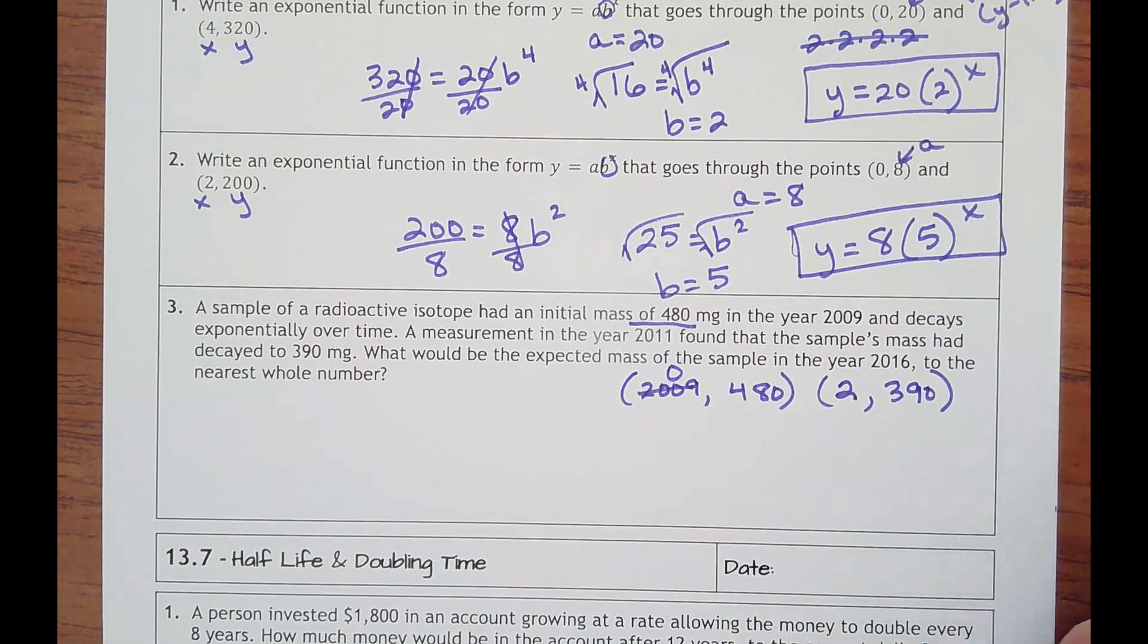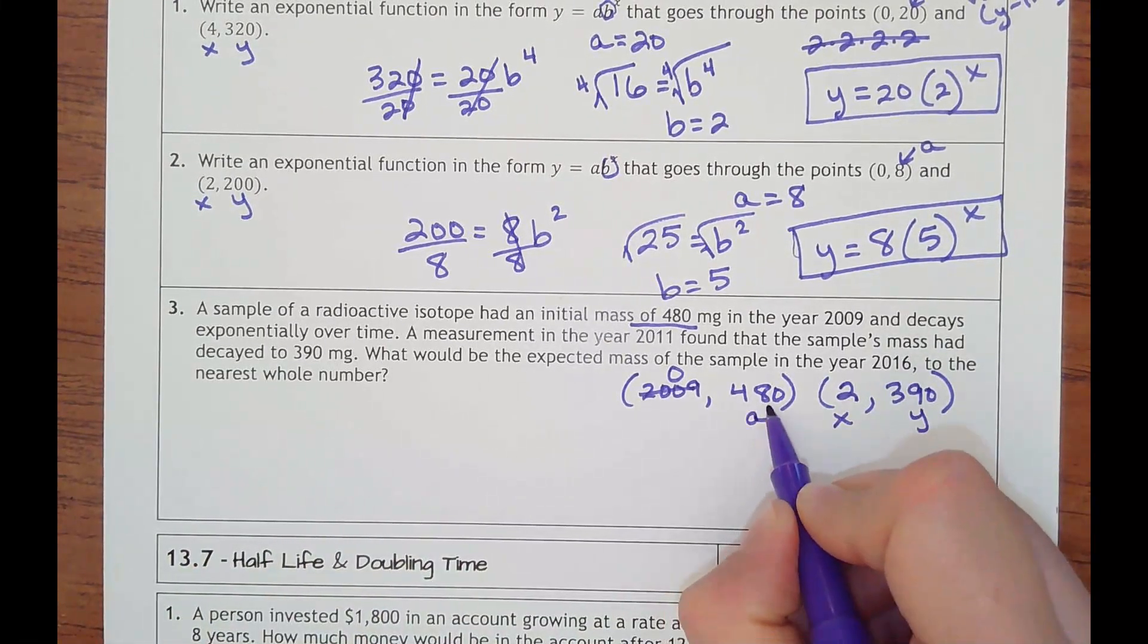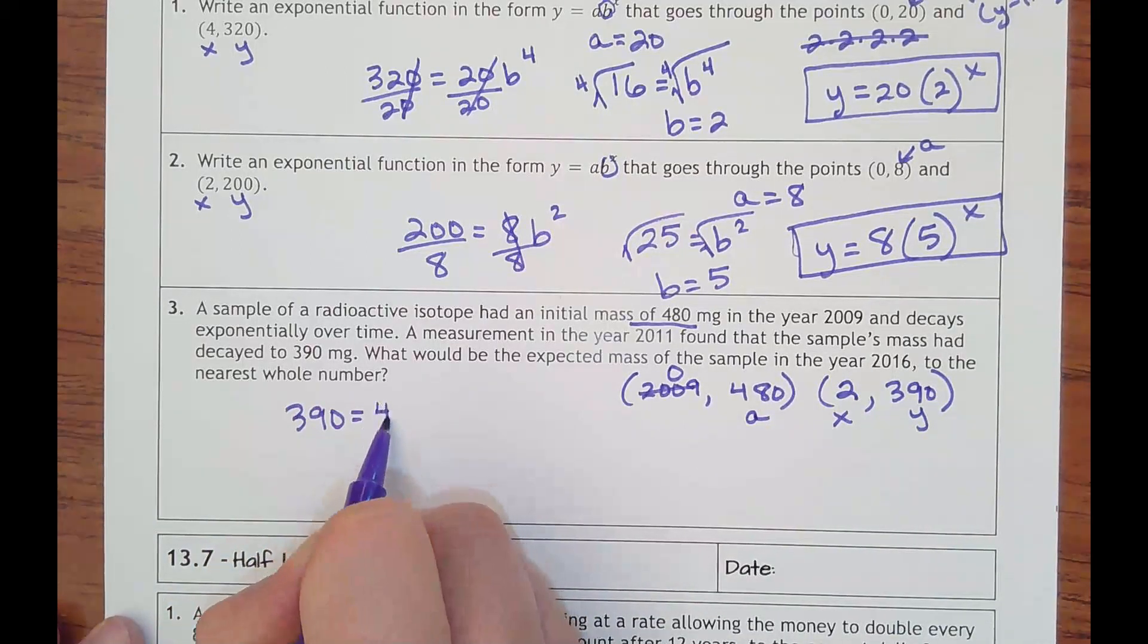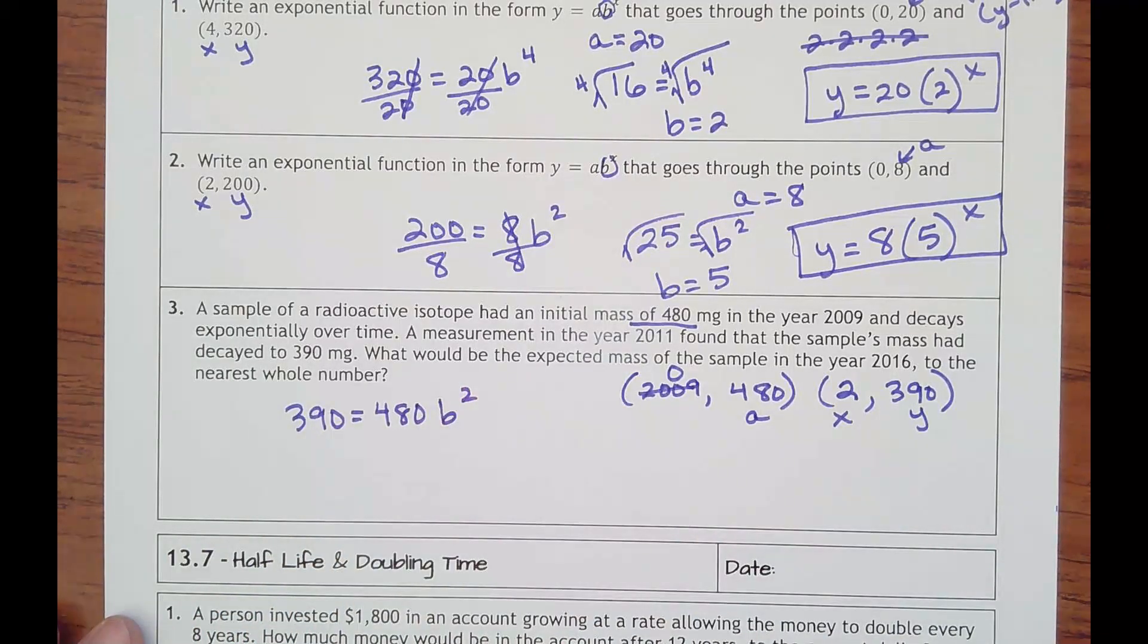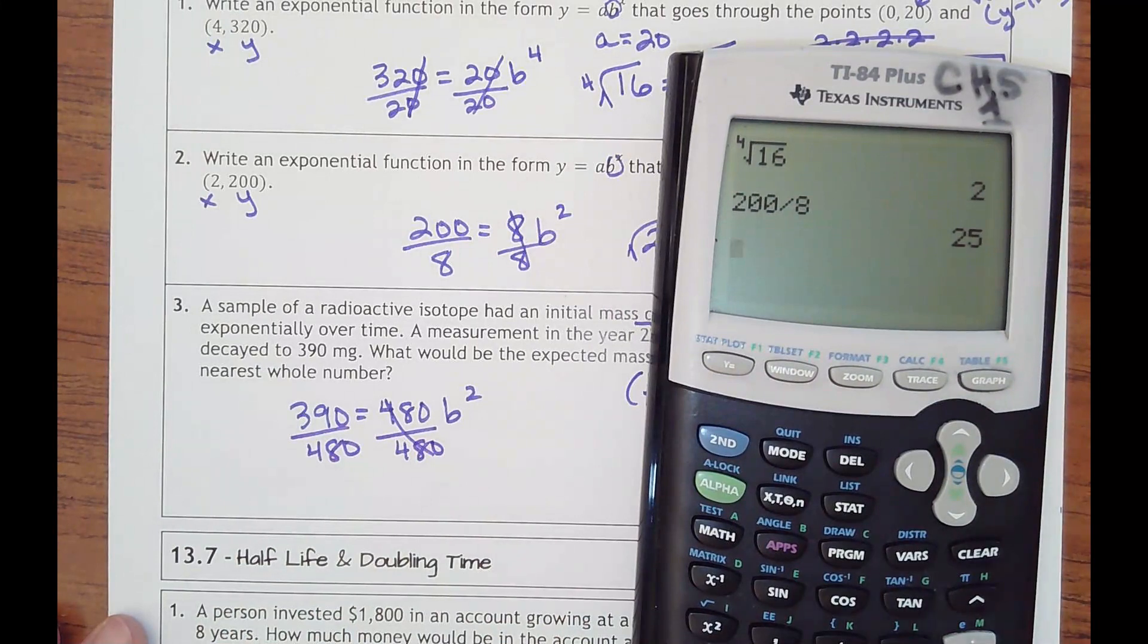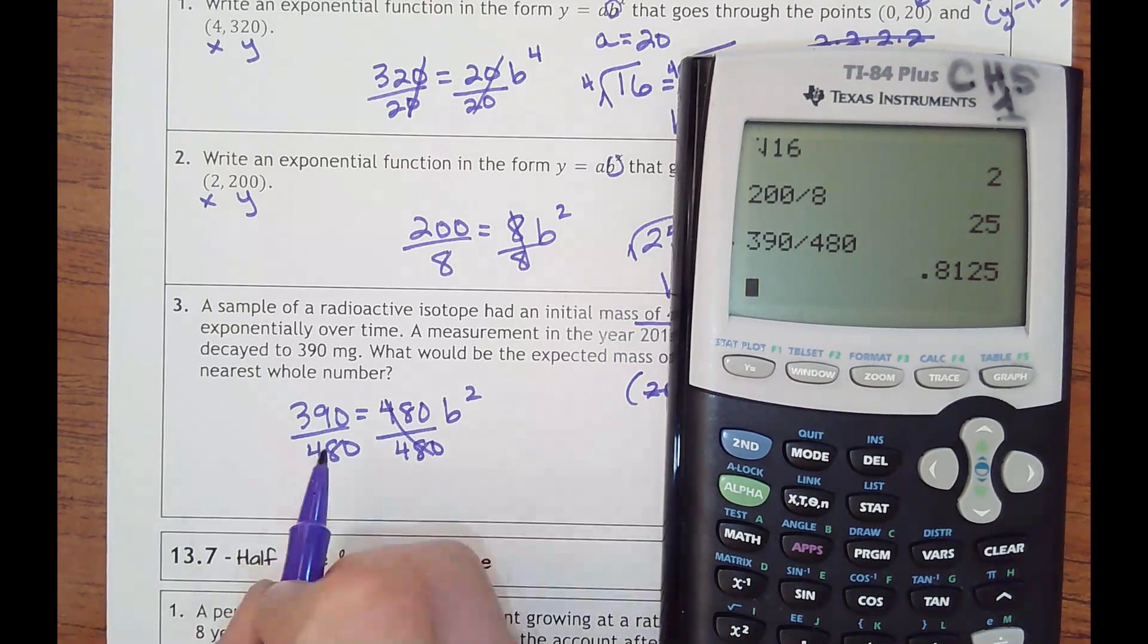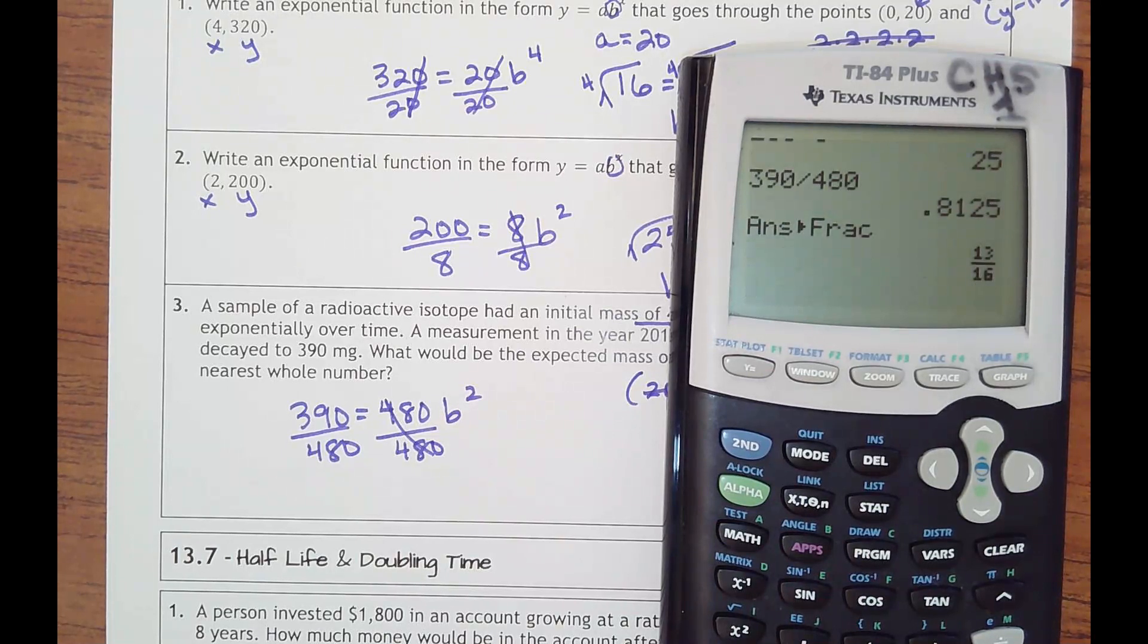Then you would want to do the same thing we did above. You would have your y value be the 390, x be the 2, your a is the initial value. So you would have 390 equaling 480 times b squared. Divide by 480. It's going to be some kind of fraction or decimal. I'm actually probably just going to leave it like that. So then that would be, let's just see what that is as a fraction. It's not bad, but I'm going to leave it as a decimal.